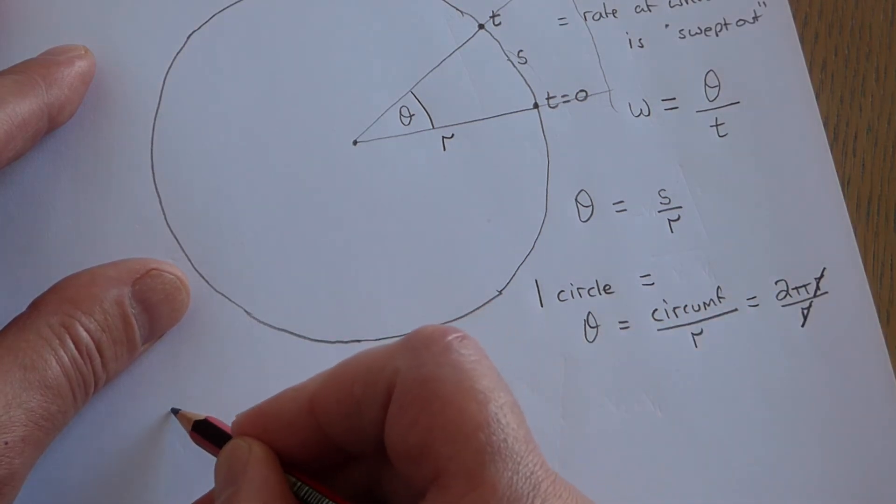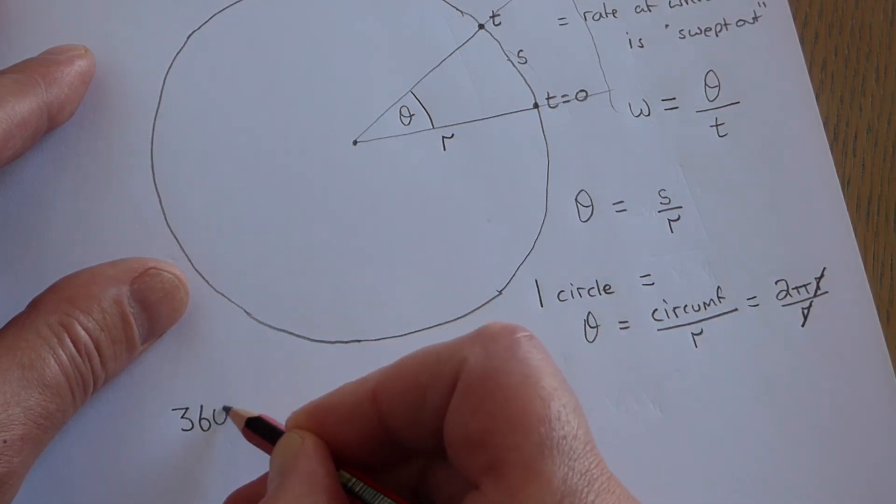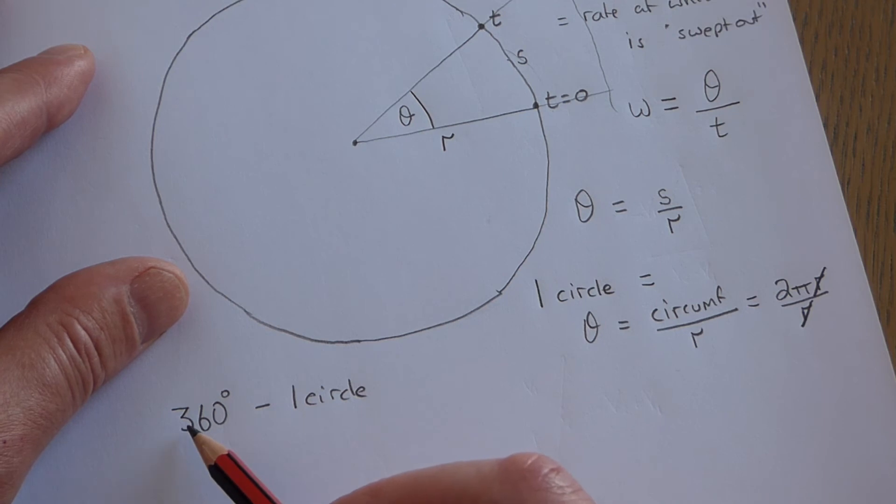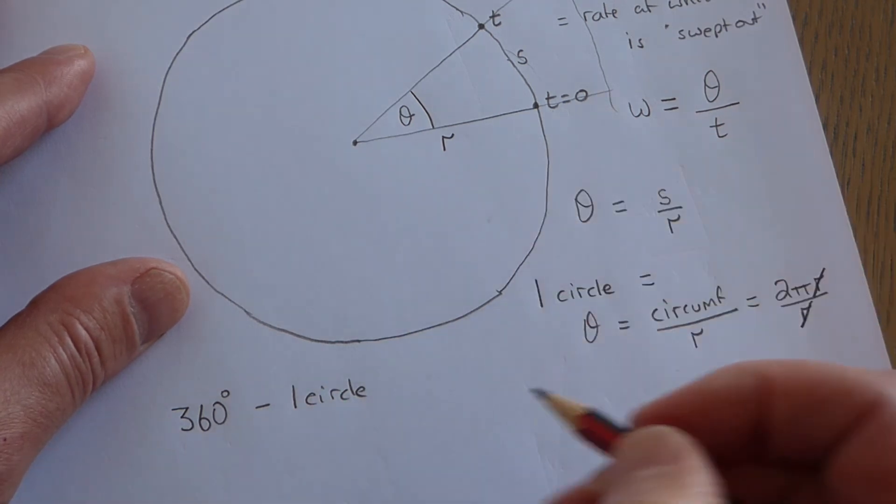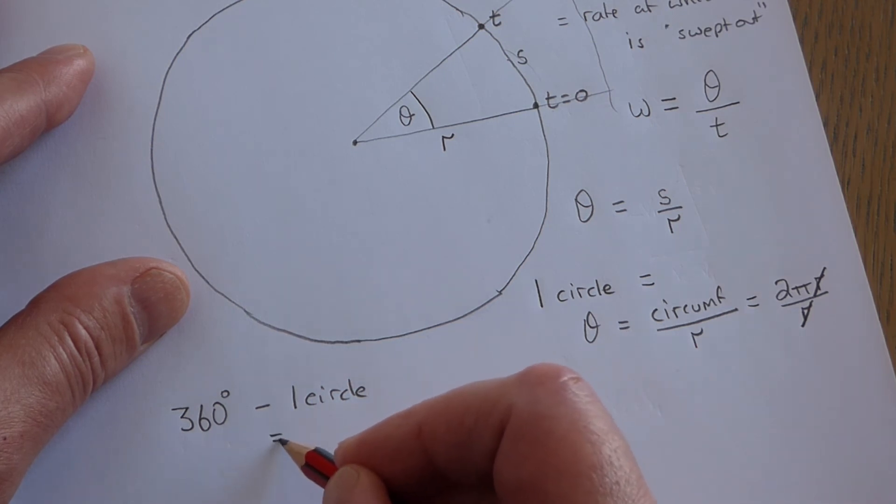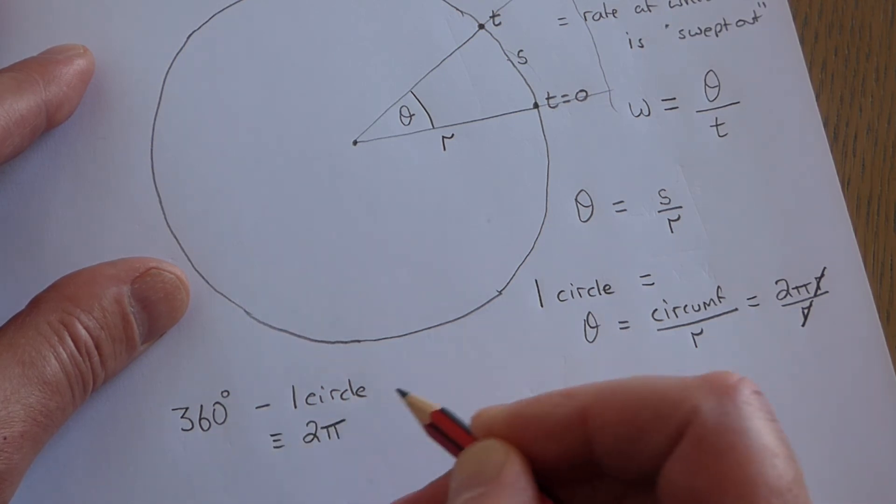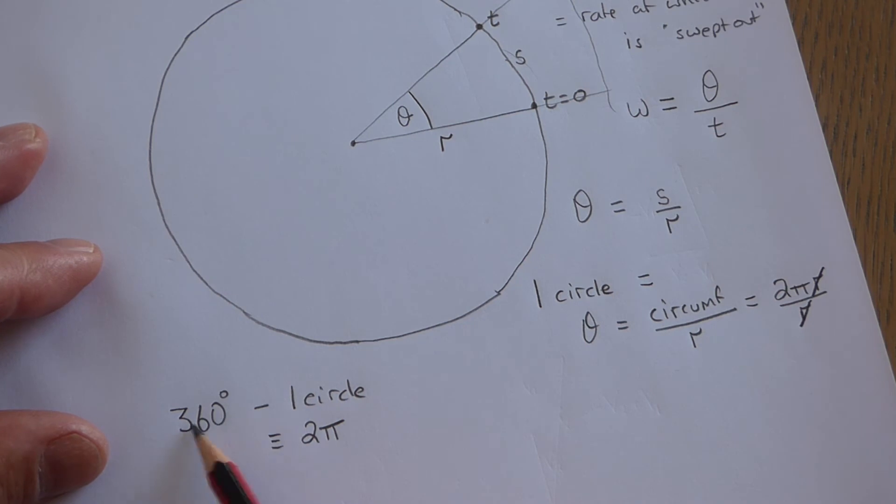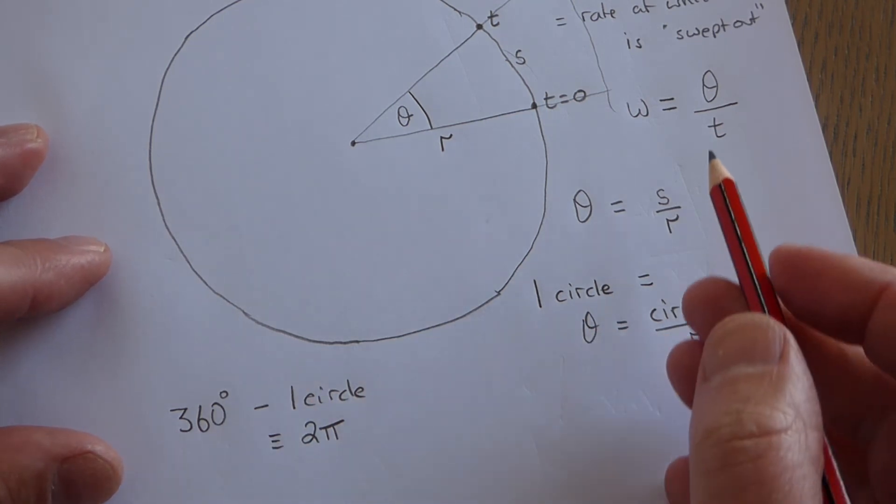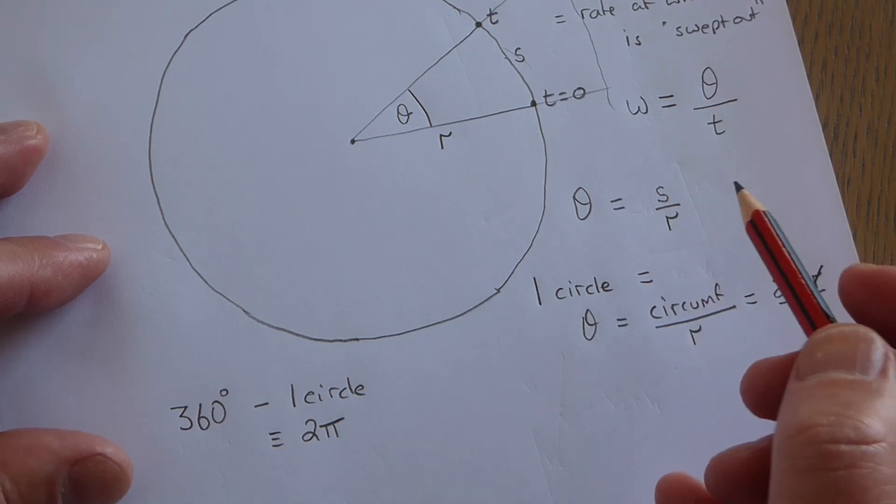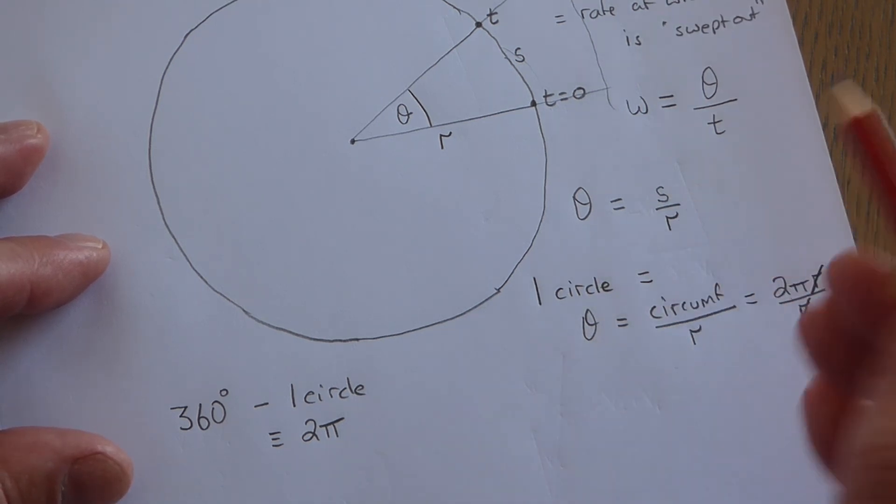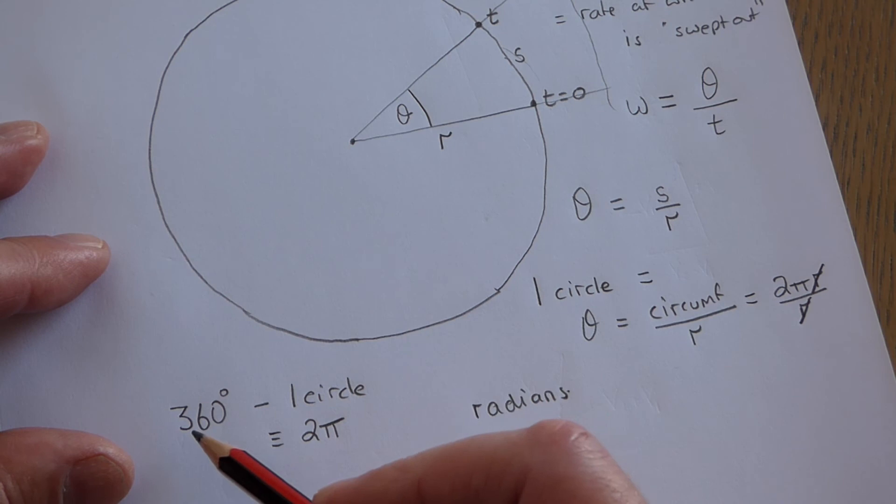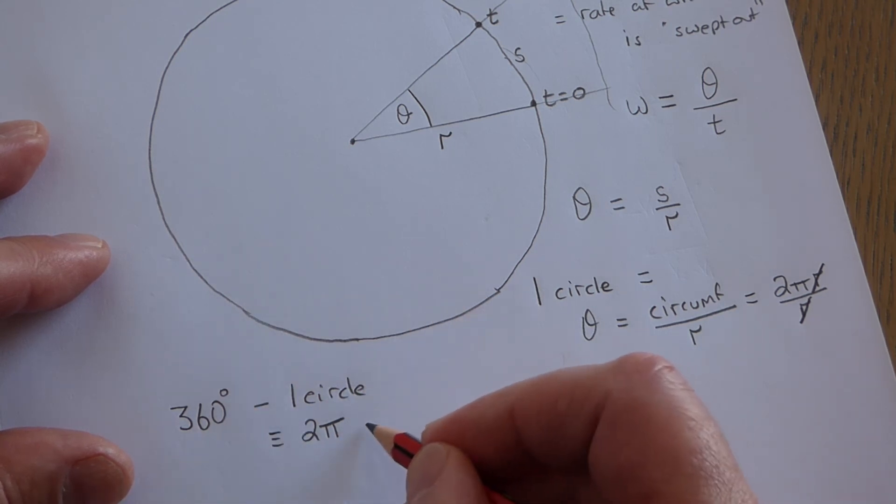So if I take an angle of 360 degrees, which is basically one circle, and I convert your 360 degrees into this new way of measuring angles, that would be equivalent to 2π. Now we like to have names for our units. We use degrees for the 360 version. Well, these angles here that we're talking about, defined as arc length divided by radius, they're called radians. So you would say that 360 degrees is equivalent to 2π radians.